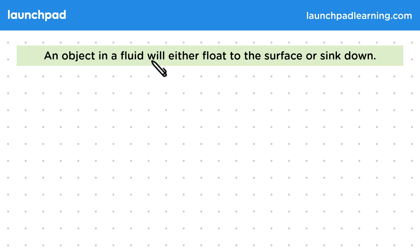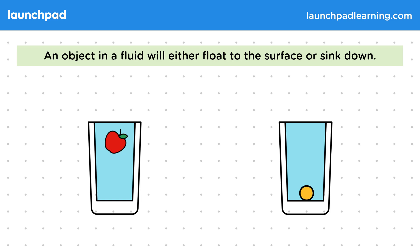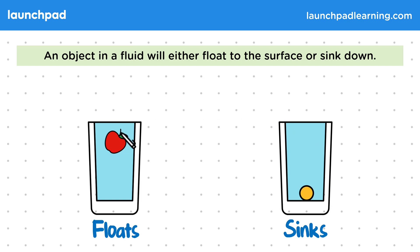An object in a fluid will either float to the surface or sink down. For example, this apple floats in water as it is moving up towards its surface, but the coin sinks as it has moved to the bottom of the glass. We can also apply the idea of floating and sinking to gases, since these are also fluids, but at GCSE you only need to know about floating and sinking in liquids.